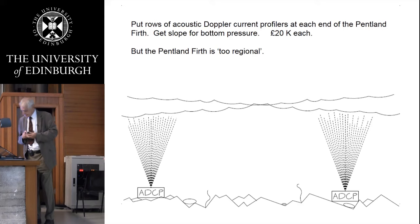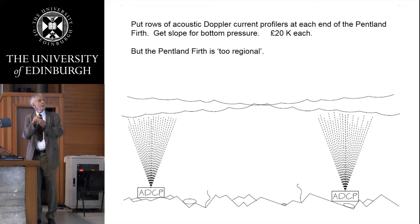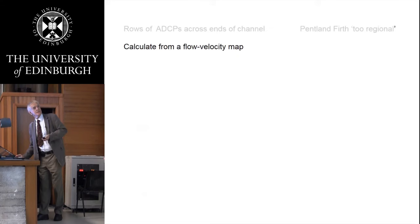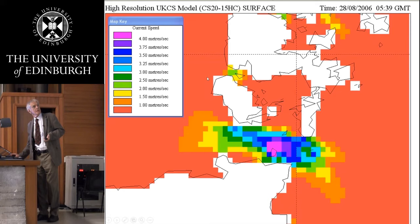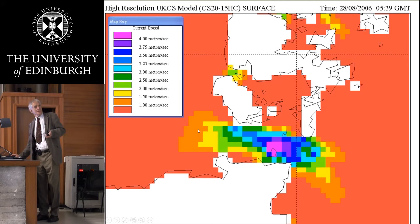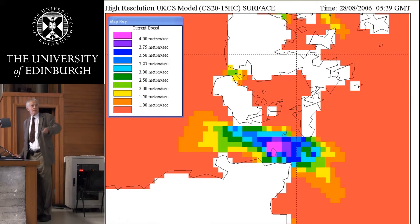An alternative is to calculate losses from a flow velocity map. I was able to get a flow velocity map — this is a map of Scotland, here's John o' Groats, here are the Orkney Islands — and the colours are giving you the velocities through the channel. We know the area of each of these squares, so we can use an equation for bottom friction. If we have an idea about what the bottom friction is, we can work out what the total losses across that area are.